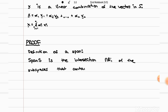And using the theorem on the intersection of a collection of subspaces, we can say that span S is automatically going to be a subspace as well. By the way, subspace, vector space, and linear space are interchangeable, so it doesn't matter what you call it.